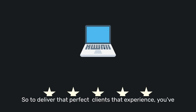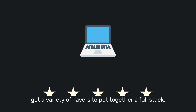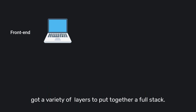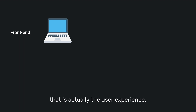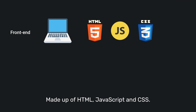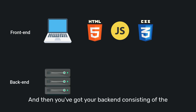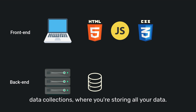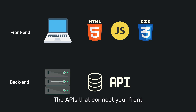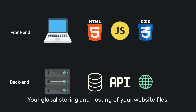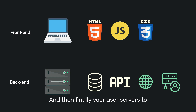To deliver that perfect client-side experience, you've got a variety of layers that make up a full stack. You've got your front end on the client side — the user experience made up of HTML, JavaScript, and CSS. Then you've got your backend consisting of data collections where you're storing all your data, the APIs that connect your front end to the backend securely, global storing and hosting of your website files, and finally your user servers to keep all of your data and users secure.